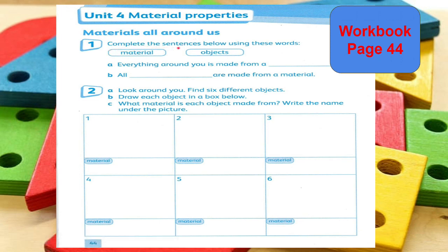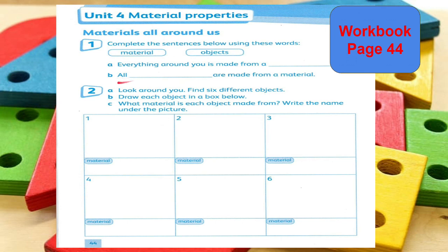Number 1, complete the sentences below using these words: Material, Objects. Letter A: everything around you is made from a material or objects — choose among these two. Letter B: all objects are made from a material.